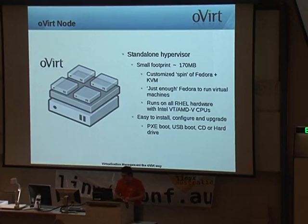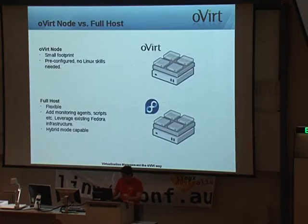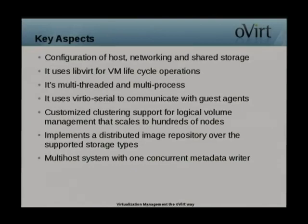oVirt Node is the second component. There are two versions: the standalone hypervisor, which is a very small custom spin of Fedora using just enough Fedora to run on machines and runs on any RHEL-compatible hardware. As an alternative to oVirt Node, you can use a full host — for example, a Fedora host with VDSM and libvirt installed to act as a hypervisor. Key aspects include configuration of hosts, networking, and shared storage. It uses libvirt for VM lifecycle operations, is multi-threaded and multi-process, and uses VirtIO serial to communicate with guest agents.